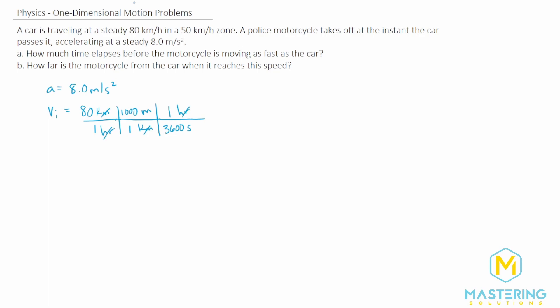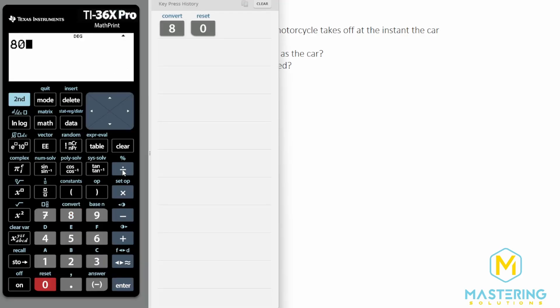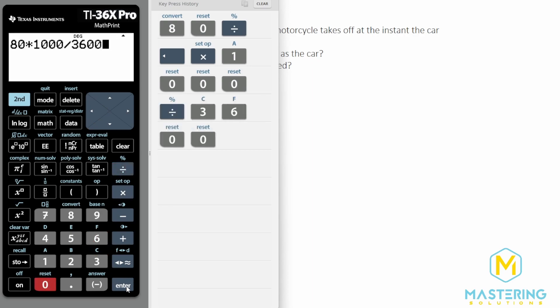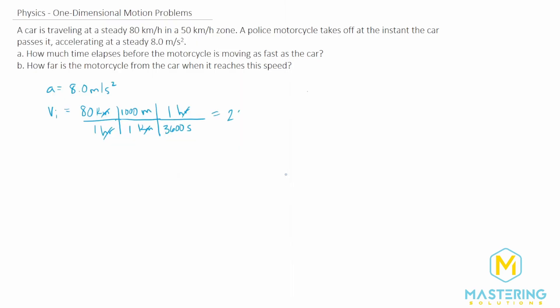Now the hours will cancel and we have meters on top, seconds on the bottom, which is standard. So we take 80 times 1000 divided by 3600. 80 multiplied by 1000 to put us into meters, then divide by 3600 to put us into seconds, which gives us 22.22 repeated. I'm going to keep a few of those decimals since this is an intermediate answer, so we don't get the wrong answer from rounding. That is meters per second.